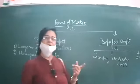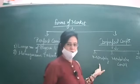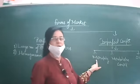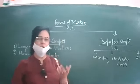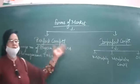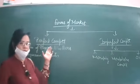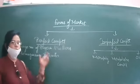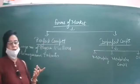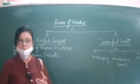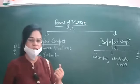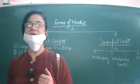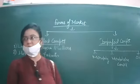In our syllabus, we have just one market form under imperfect competition — we will be studying only monopoly. So we will be discussing perfect competition and monopoly: what these terms mean, what the features of a perfectly competitive market are, and what the features of a monopoly market are. Perfect competition is that market form where there are large numbers of buyers and sellers, and all these sellers are selling homogeneous products.